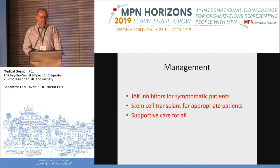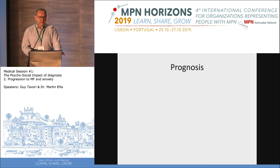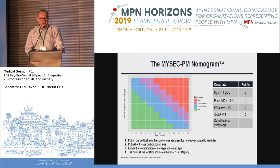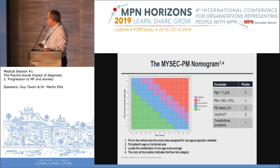Regarding prognosis: we have a number of prognostic scoring systems. The only one specific for secondary myelofibrosis is the MYSEC score — Myelofibrosis Secondary. The variables include hemoglobin, platelets, and blast cells — early white blood cells not normally found in peripheral blood. If blasts appear, the patient scores two points, which is very significant.